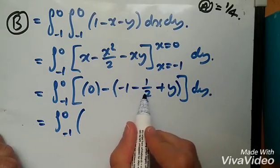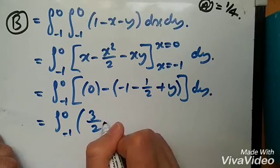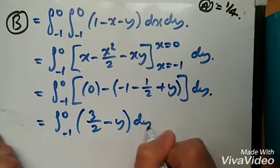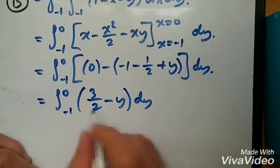So what do we have? -1 minus half is -3 over 2 plus y. And invert it, we're going to get 3 over 2 minus y. Check if this is right for you guys. But I'm pretty sure it's okay.